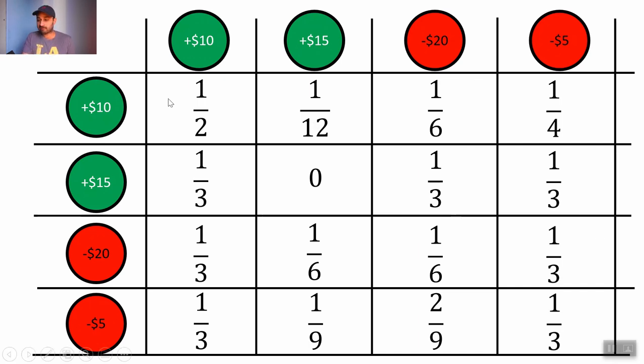For example, this one-half at the top left says that if you're currently at plus $10 there's a one-half transition probability of staying at plus $10. This zero over here says that if you're currently at plus $15 there is a zero percent chance of staying at plus $15 on your next move. And all the other probabilities here can be interpreted similarly as transition probabilities. You can check for yourself, make sure that all the rows add up to one, which is what we need for a transition matrix. So this is exactly the transition matrix for your Markov chain or your board game.